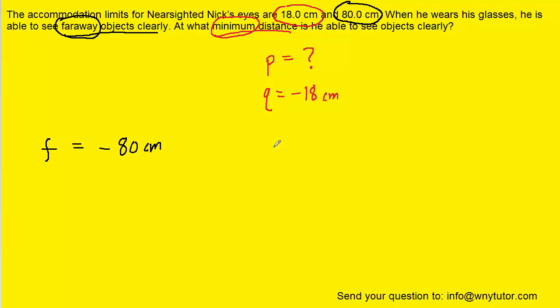We can go back to the thin lens equation. And if we wish, we can solve this equation for p, the object distance, and then plug in the known quantities. Or we can plug in the known quantities first and then solve. In this case, I think it's easier to just go ahead and plug in the known quantities first.